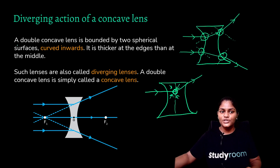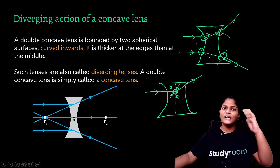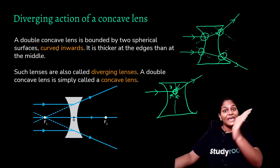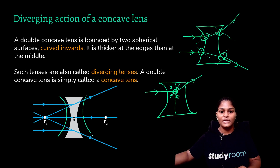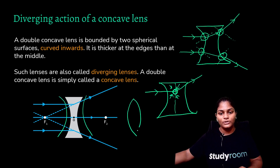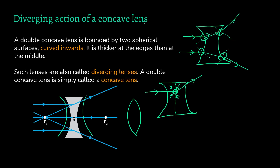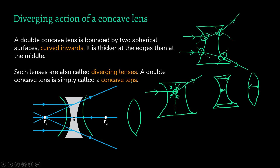A double concave lens is bounded by two spherical surfaces curved inward — concave means caving inside. Looking at the shape: in a concave lens it is much thicker at the edges, while a convex lens is thicker in the middle. So when you draw the diagrams of these two, you can tell which lens is which by where it is thicker. We also learned why the concave lens is called a diverging lens.